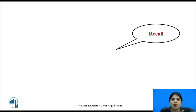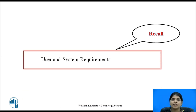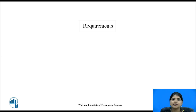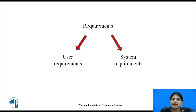Now recall user and system requirements. Pause this video for a few seconds and think about the requirements. There are two types of requirements: first, user requirements, and then system requirements. Natural language is used to write both requirements. However, system requirements are more detailed than user requirements.